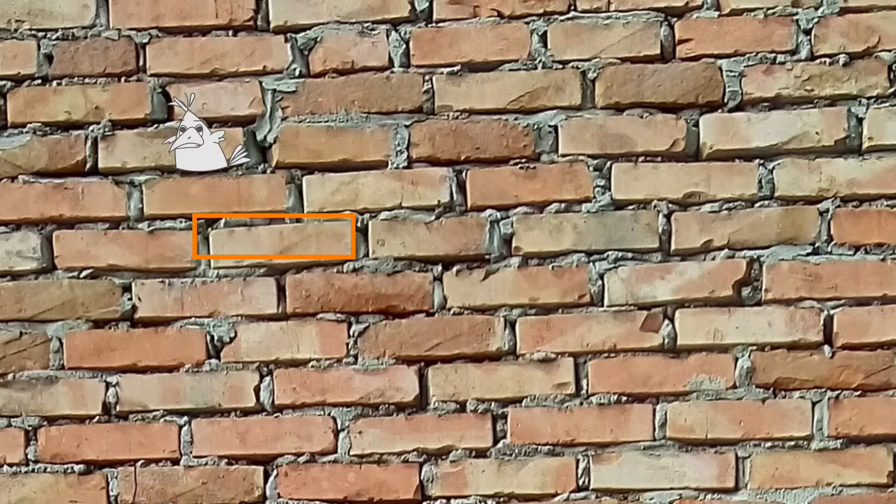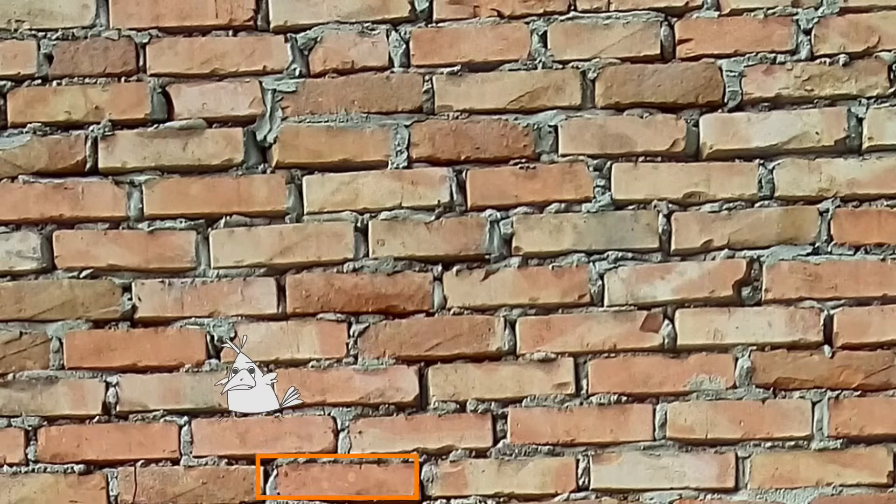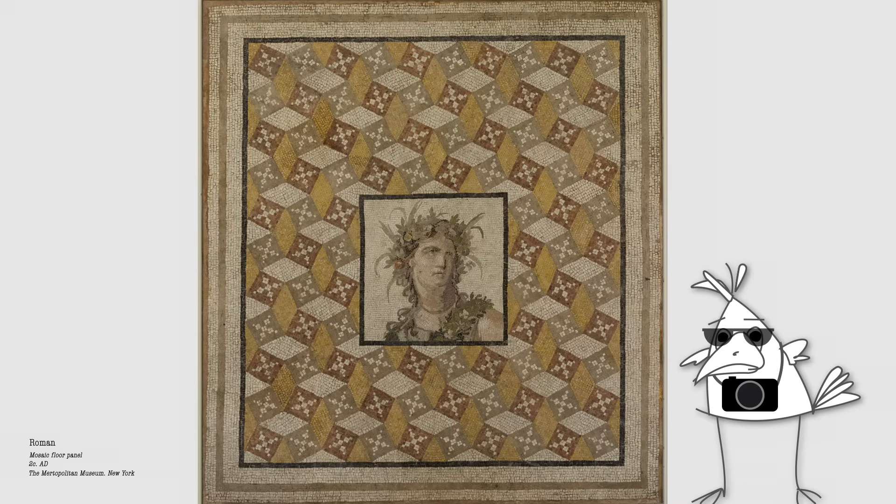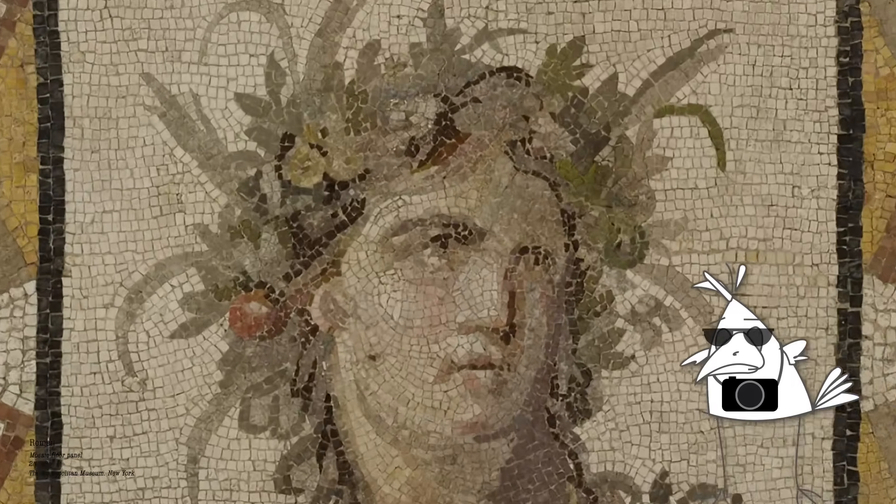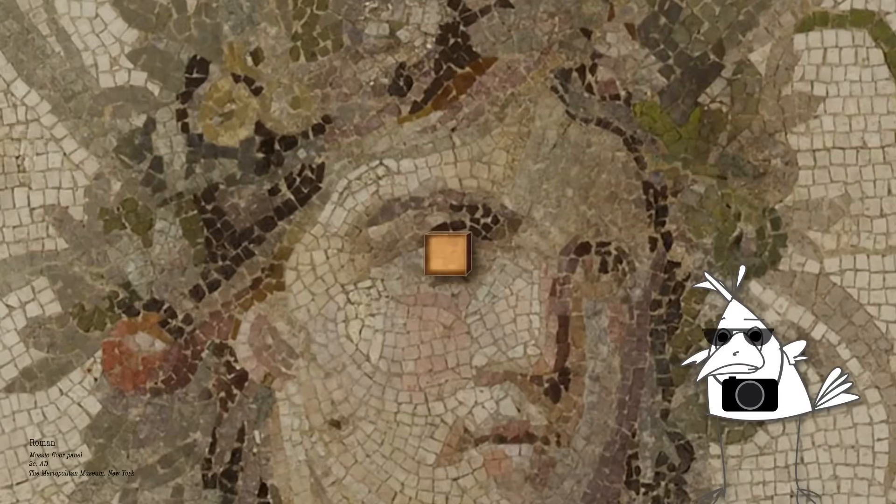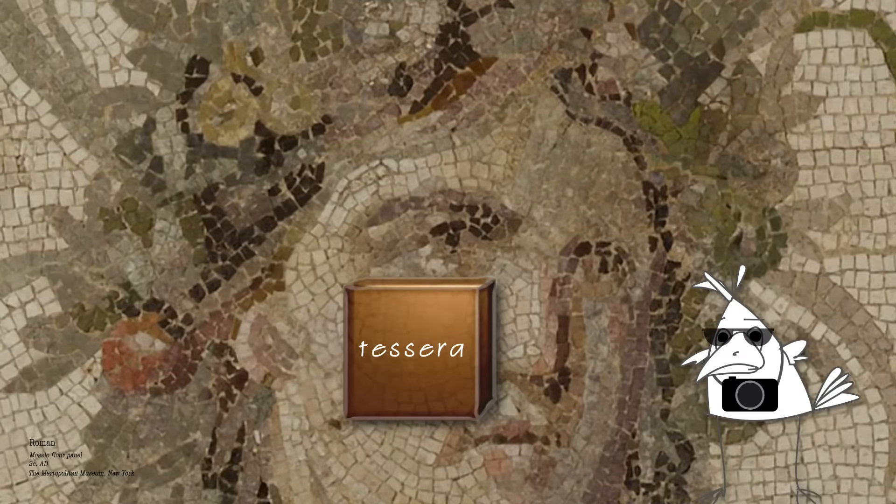The pattern of bricks on a wall is a tessellation made of rectangles. Ancient Greeks and Romans were decorating their homes with tessellations over 2000 years ago, making elaborate mosaics from small square tiles called tessera.